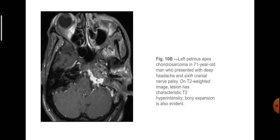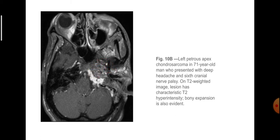This is left petrous apex chondrosarcoma in a 71-year-old man who presented with deep headache and 6th cranial nerve palsy. On T2-weighted image, the lesion was characteristically T2-hyperintense. Bony expansion is also evident.